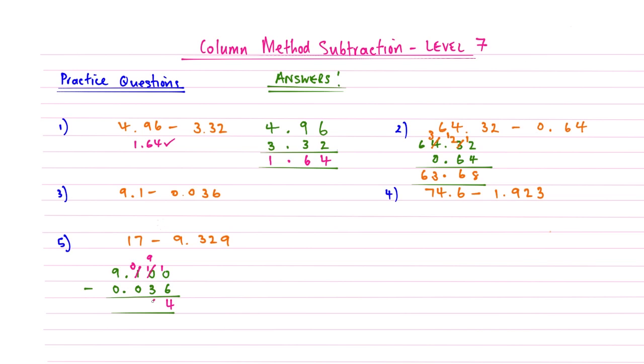10 subtract 6 gives me an answer of 4. 9 subtract 3 gives me an answer of 6. 0 subtract 0 is nothing. Decimal points lined up, and then we've got 9 subtract nothing, and so that just gives me 9. So the answer to question 3 is 9.064.